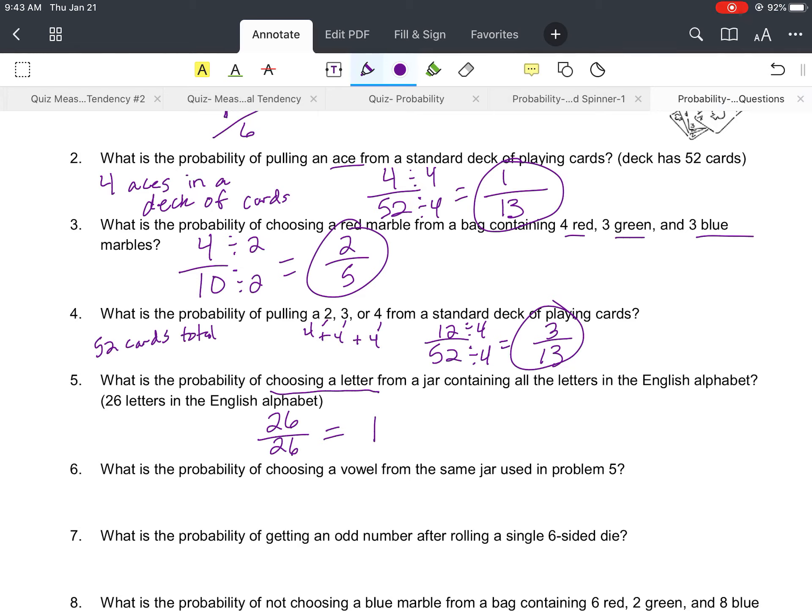And then the last one I'm gonna do is number six. It says what is the probability of choosing a vowel from the same jar used in problem five? Okay, so this time we're still using the same jar, so that means we've got 26 letters in it, but this time they're specific and they say choosing a vowel.